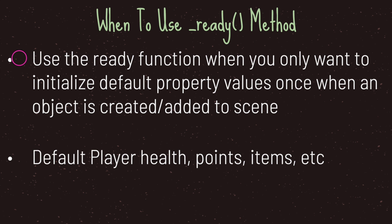So when exactly do we use the ready virtual method? We use it when we want to initialize default property values once, when our object is created and added to a scene tree. This includes things like default player health points, items, and so on. In most cases we only need to set default values once and never again, which makes the ready virtual method the perfect candidate.